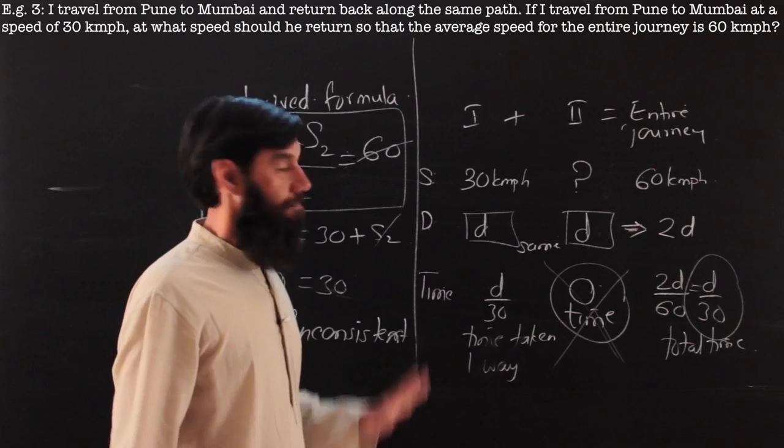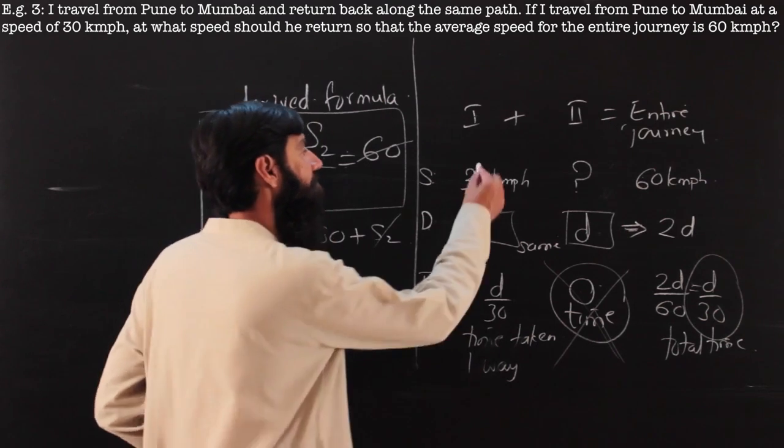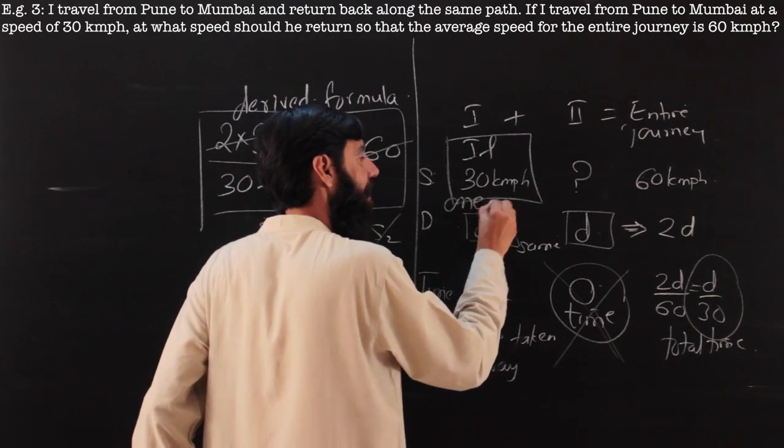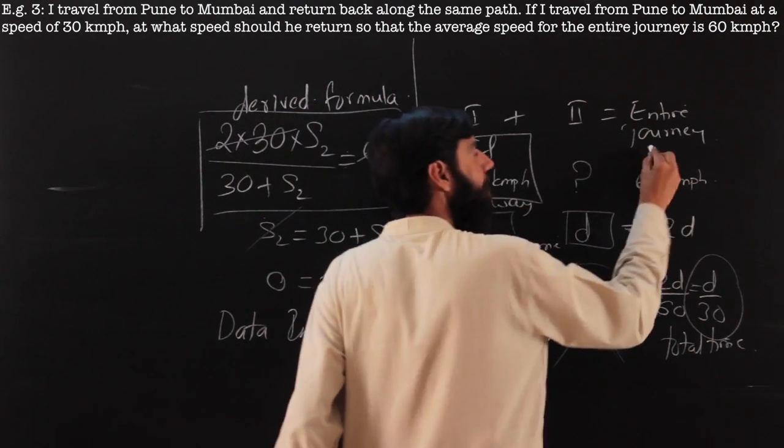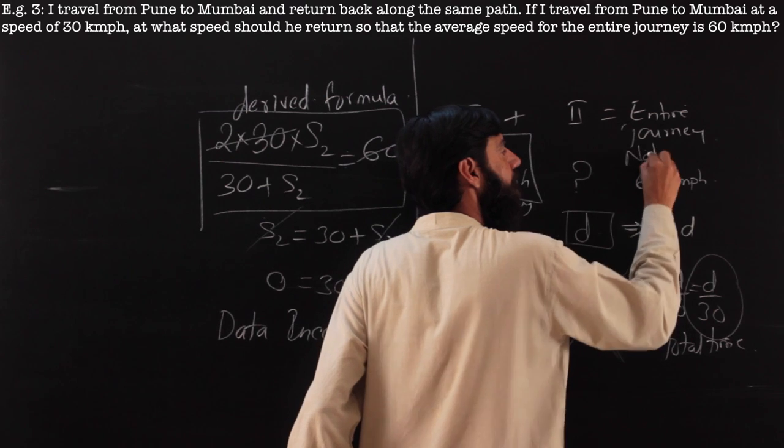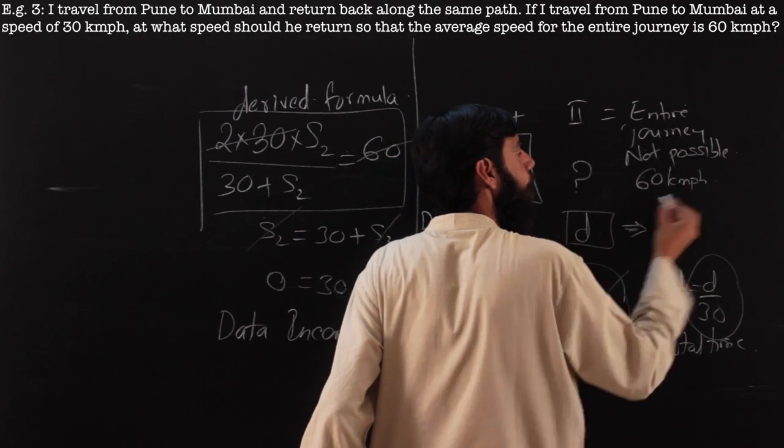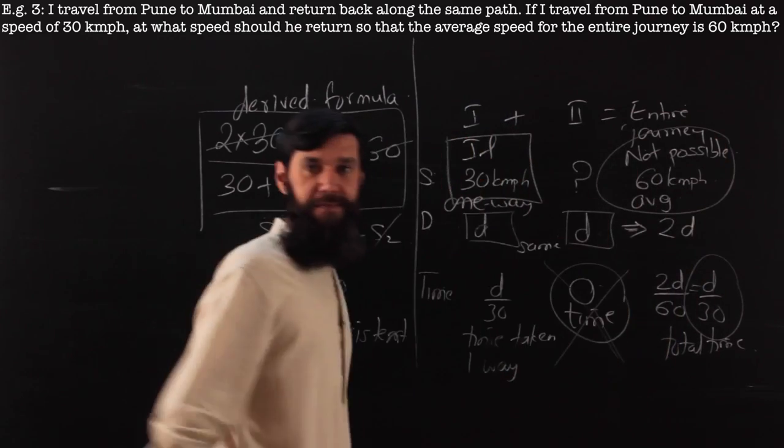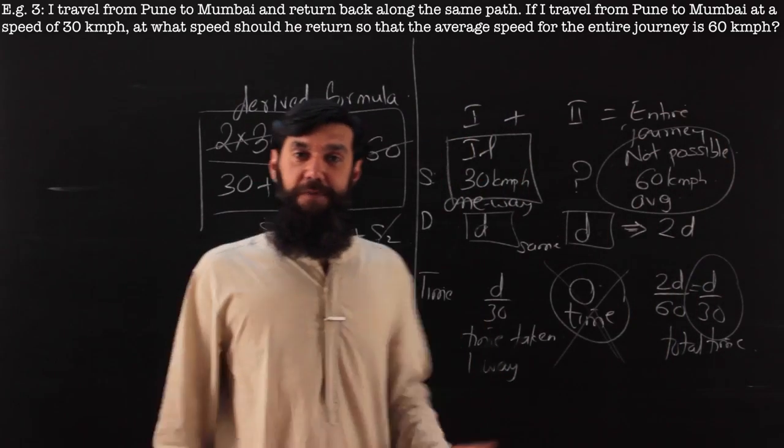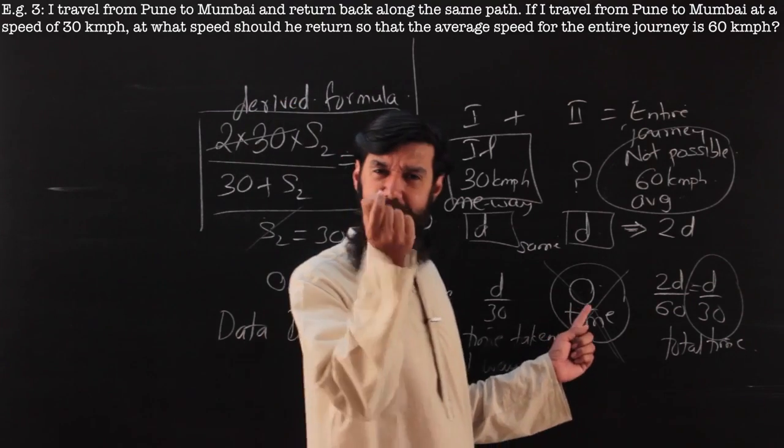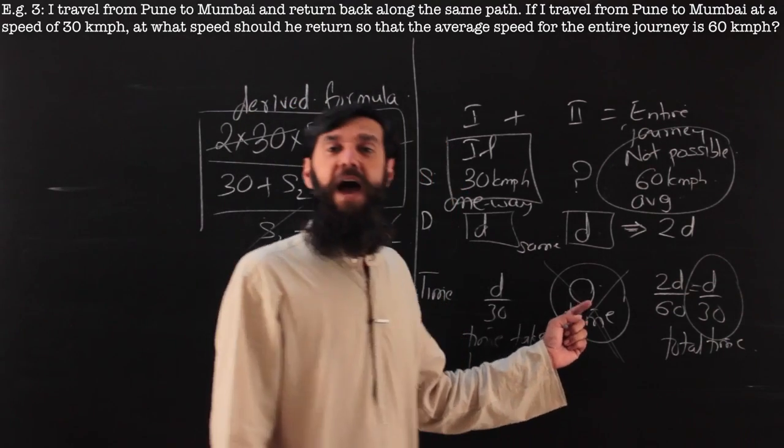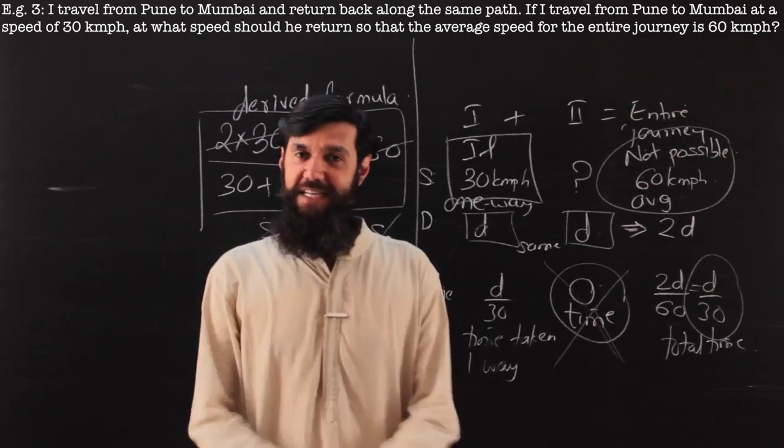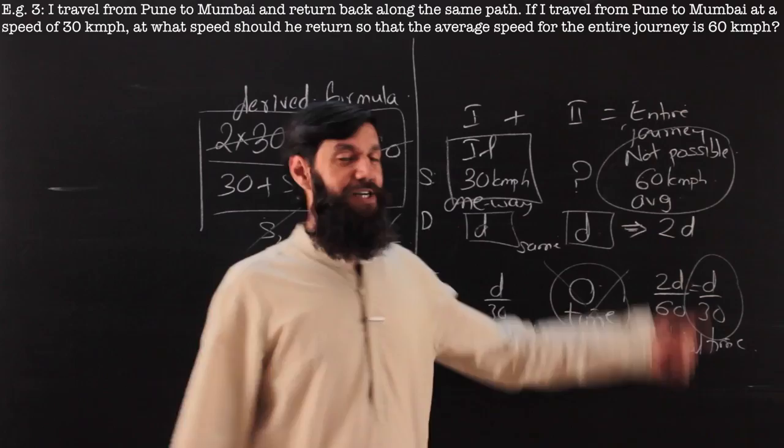What this means is if I travel at 30 kilometers per hour one way, there is no way, it is not possible to keep an average speed of 60 kilometers per hour. Double of it cannot be possible. Even if I come at a speed of light, I would still take some fraction of a time. And the fraction of a time will result in the average speed being less than 60.